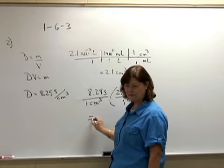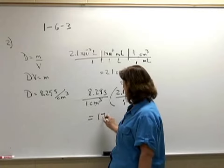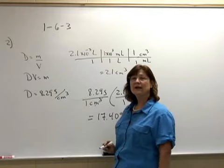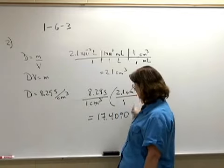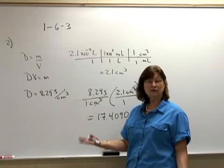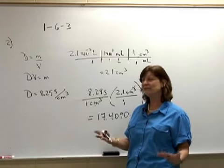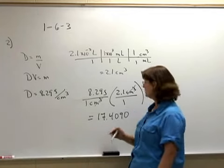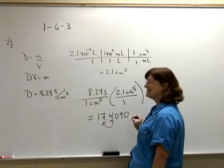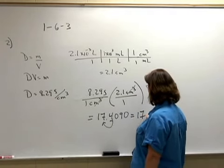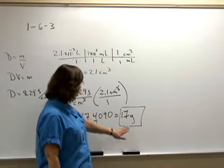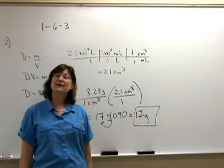When I do the math, I get 17.4090. I always cut it off after the fourth digit, then go back to the original problem and look for the least number of significant digits given in the problem, and that would be 2. I look at the 4. It does not round the 7 up. I get 17 grams as my final answer. 17 grams is the mass in this problem.